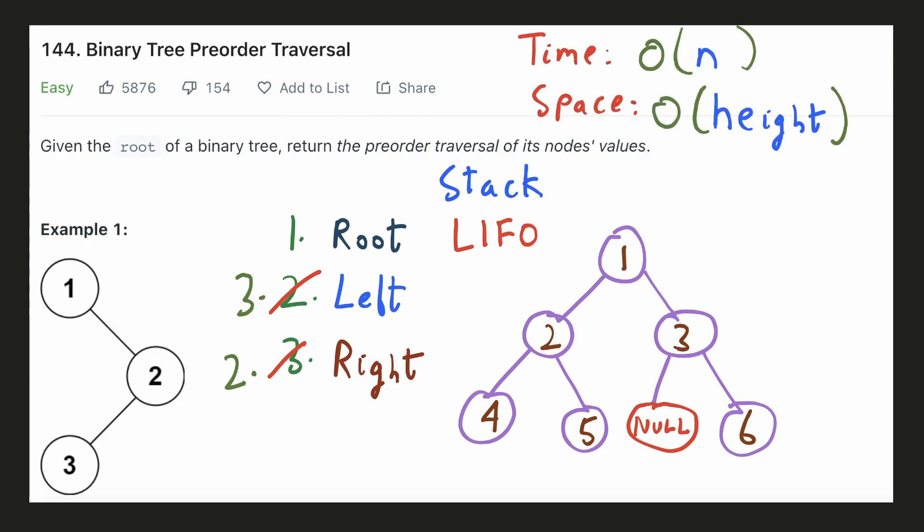The time complexity of both solutions would be O(n) because we have to access all the nodes just once and for the space complexity, both our recursive call stack and the iterative stack can at most have the number of elements equal to the height of the tree. Let's implement both the solutions.